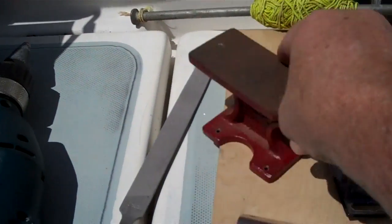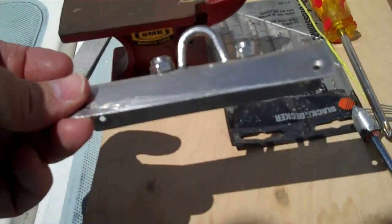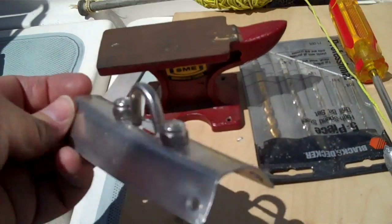We have a small anvil that we used to flatten out the shackle, and you can see the shackle now attached to the aluminum.